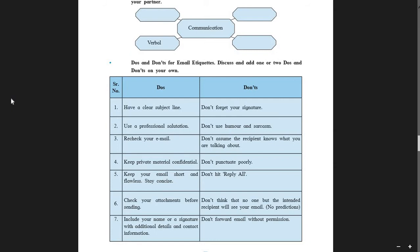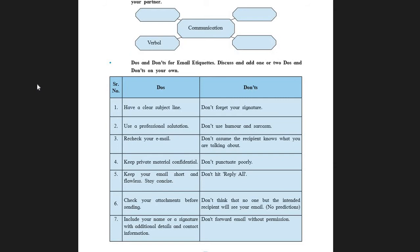Next, let us discuss the don'ts. Many times when writing the don'ts column, people use words like 'avoid' or 'refrain from' instead of 'don't.' Number one: don't forget your signature — that is a must. Don't use humor and sarcasm when writing your email, as this is one of the etiquettes you will follow. You will not crack silly jokes or use any language that will hurt the person at the other end, because your email may be read by many people around.